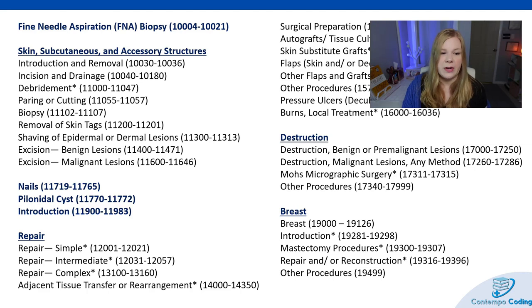Adjacent tissue transfers or rearrangements are different from a complex closure. To code them, we need two defect sizes: the primary defect and a secondary defect from the skin that's rotated in to fill the hole. We're taking one chunk of tissue, taking another chunk and rotating it in — that requires two sizes to calculate the total square centimeters. Adjacent tissue transfers are based off of not only square centimeters but your location as well.